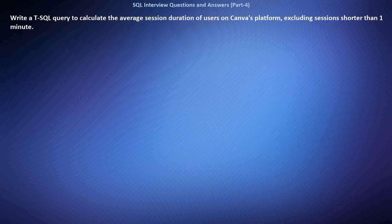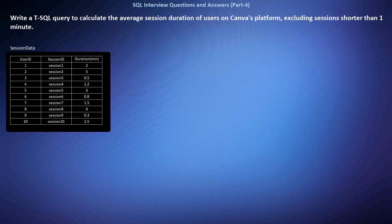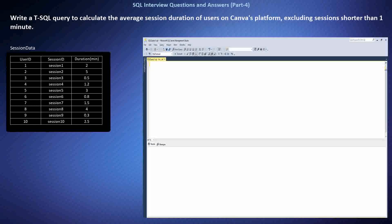Write a SQL query to calculate the average session duration of users on Canva's platform, excluding sessions shorter than one minute. We aim to determine the average duration of user sessions on Canva, filtering out sessions that lasted less than one minute. This analysis provides insight into user engagement on the platform. Please feel free to pause the video and try solving the query yourself before resuming.